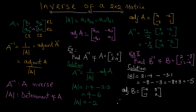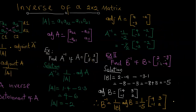Therefore, the inverse of matrix B is 1 over the determinant of B times its adjoint, which equals 1 over negative 5 times [[-4, 3], [-1, 2]]. Bringing the negative up, the final answer is negative 1 over 5 times [[-4, 3], [-1, 2]].